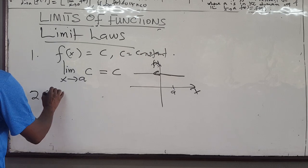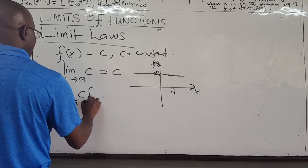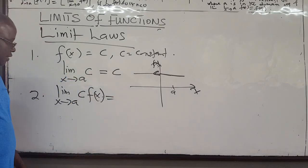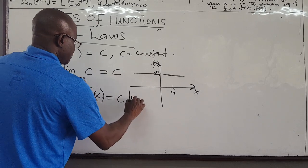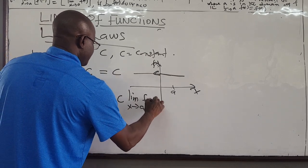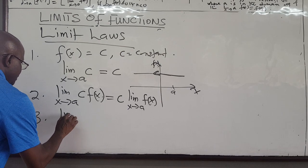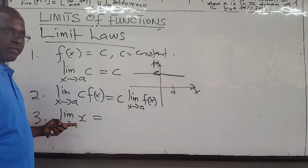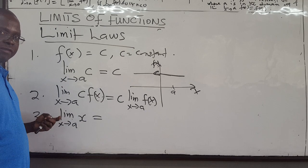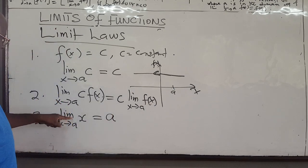Next, if you have a constant times a function, you can pull the constant out and find the limit of the function separately — the limit as x approaches a of f(x). Also, the limit as x approaches a of x will be very useful. Since x is a polynomial, it's continuous everywhere, so you can just put a in: the limit as x approaches a of x equals a.